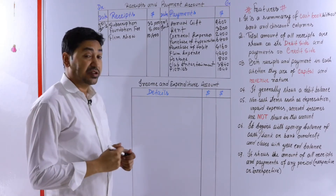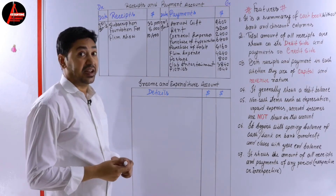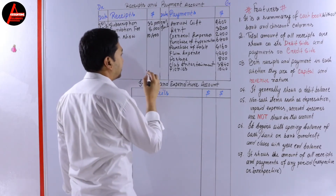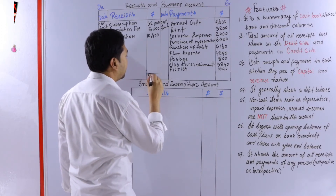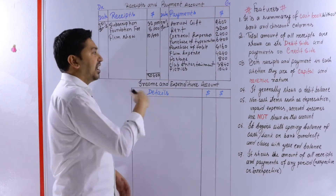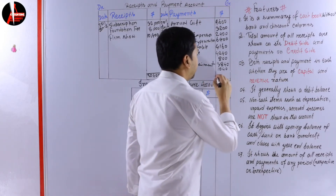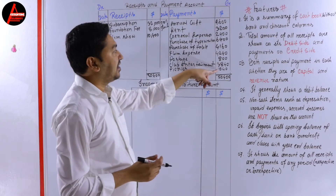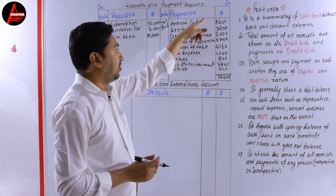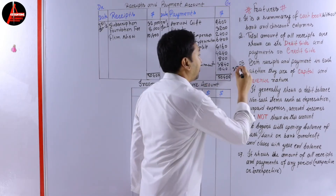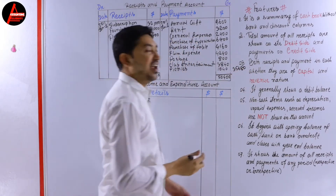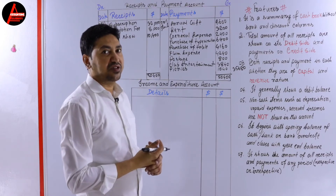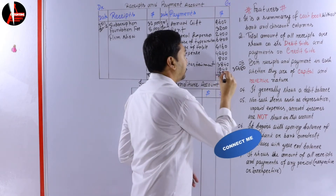Now we have three receipts and all other items as payments. We need to balance the account - check how much is the balance carried down. If you add the receipt column your answer is fifty thousand four hundred dollars. Take the same value to the opposite side: fifty thousand four hundred dollars. Now add all the payment side - the answer is thirty-five thousand six hundred eighty dollars. Subtract this from fifty thousand four hundred dollars - your answer is fourteen thousand seven hundred twenty dollars.